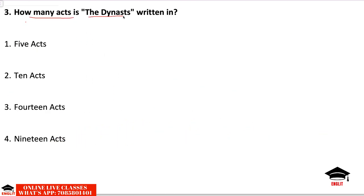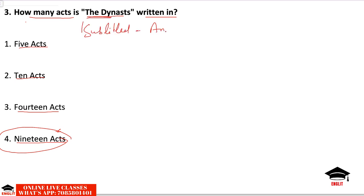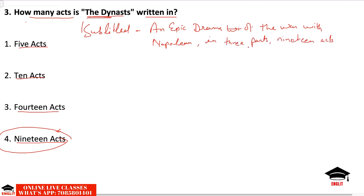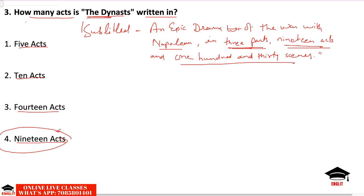Next question: how many acts is The Dynasts written in — 5 acts, 10 acts, 14 acts, or 19 acts? The correct answer is 19 acts. The verse drama The Dynasts is subtitled 'an epic drama of the war with Napoleon in three parts, 19 acts and 130 scenes.' There are three parts, 19 acts, and 130 scenes — based on the Napoleonic wars.